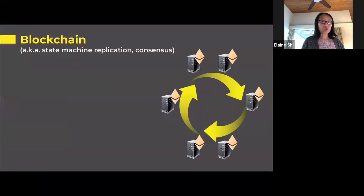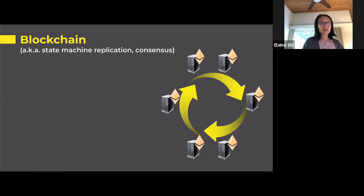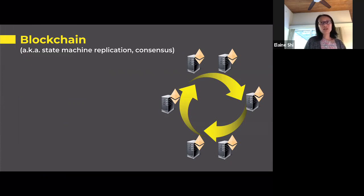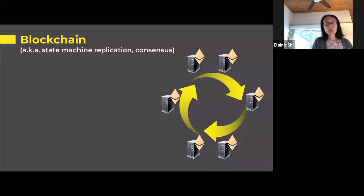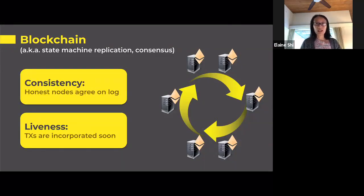Let me first explain what the blockchain protocol is. Blockchain is the new modern name — classically we called them state machine replication or consensus. For the rest of the talk, all these terms pretty much mean the same thing. In this example, we have a set of Ethereum nodes and they're trying to agree on the linear log of transactions. There are two important security properties that we care about: namely consistency and liveness.